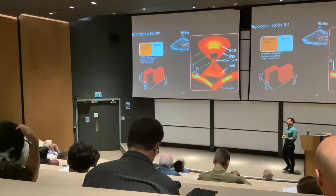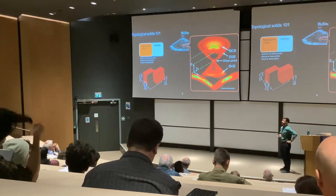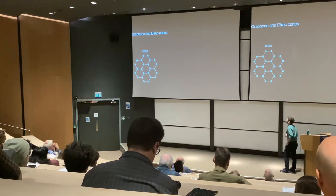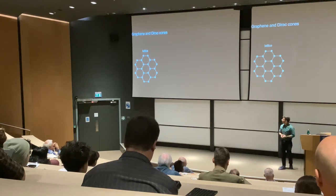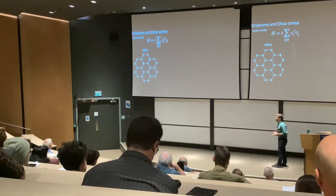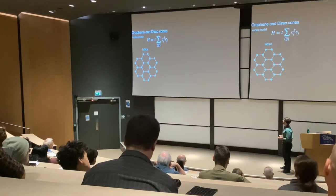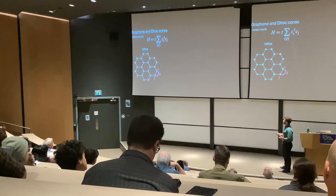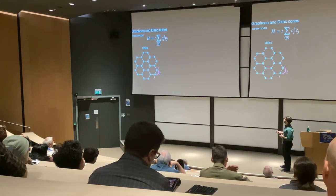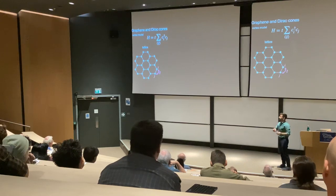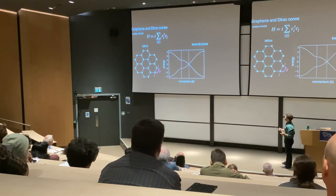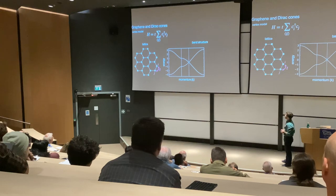Topological insulators were not actually the first example of these — we call them Dirac cones, used by Dirac in the 1930s. In fact, graphene, a two-dimensional material on a lattice of carbon atoms, is another well-known example. A good model for graphene considers electrons hopping between nearest neighbors only with a certain probability. If you use this tight-binding model to plot graphene's dispersion relation — energy versus momentum — you also obtain Dirac cones.